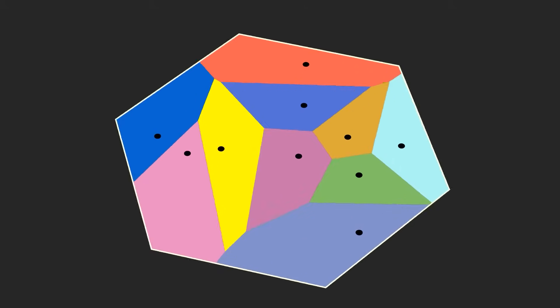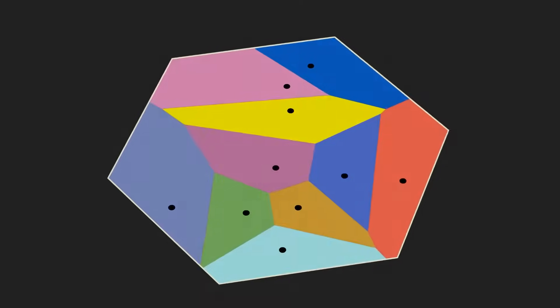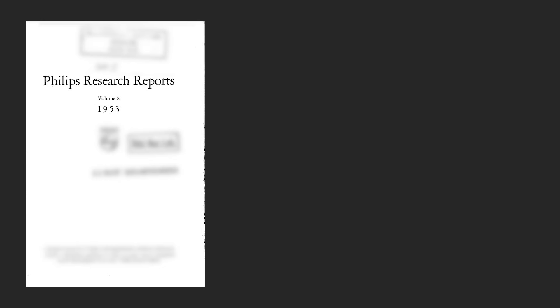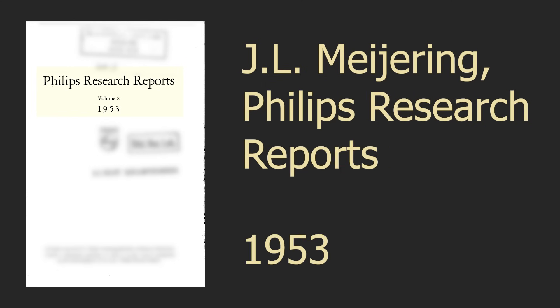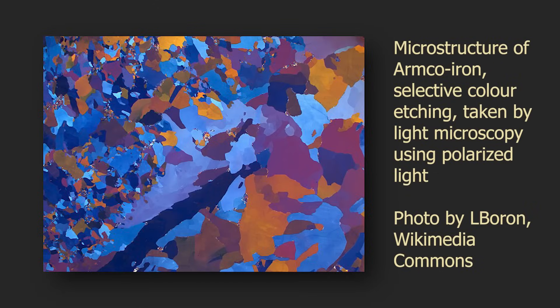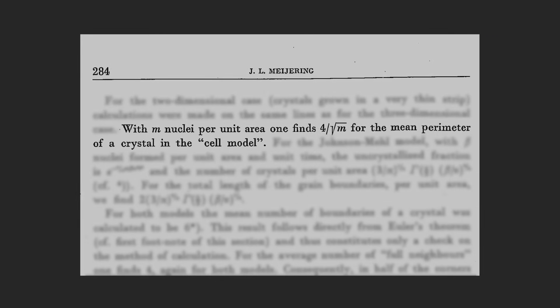This was actually discovered almost a hundred years ago. A 1953 paper by Meiring in Phillips Research Reports analyzes many theoretical properties of Voronoi diagrams in the context of physical crystal structures. This was before we had computers.